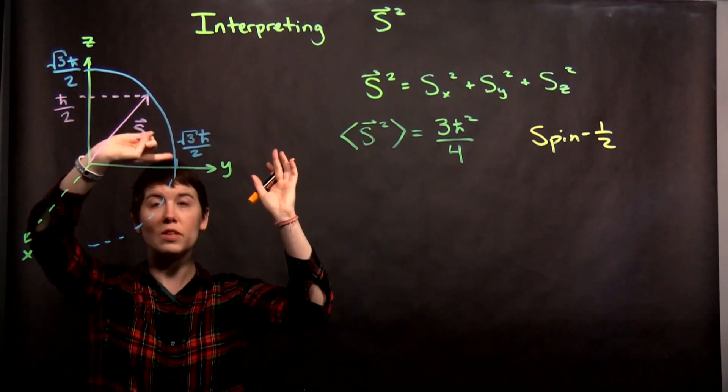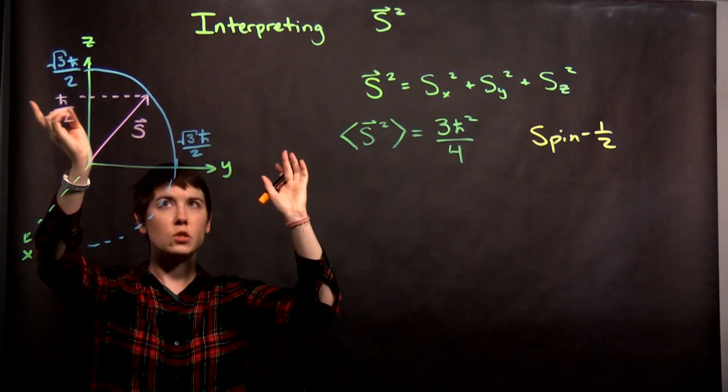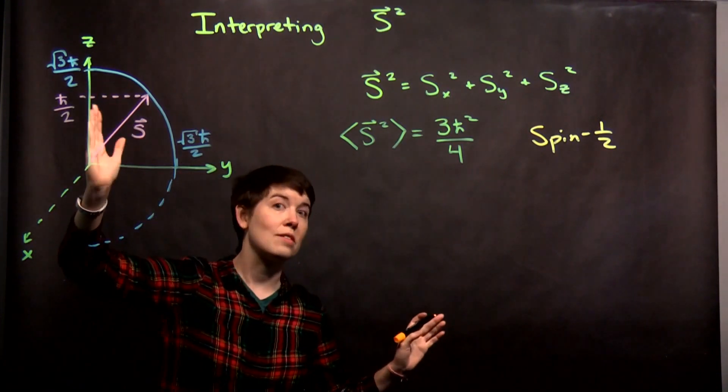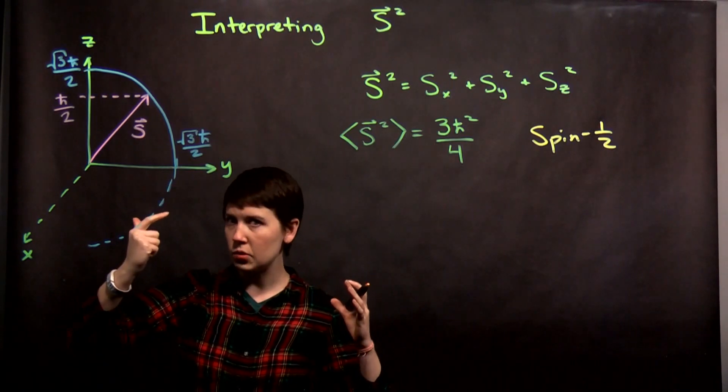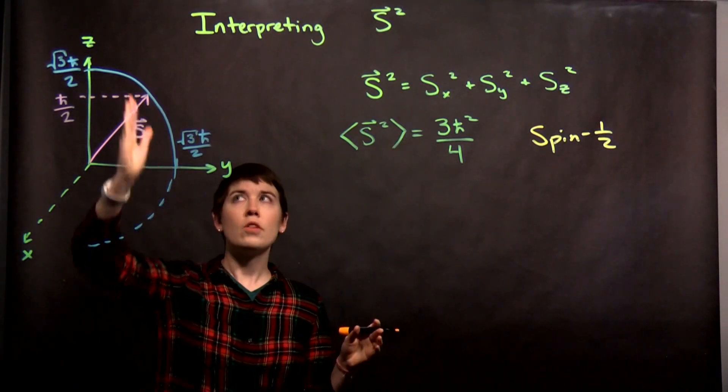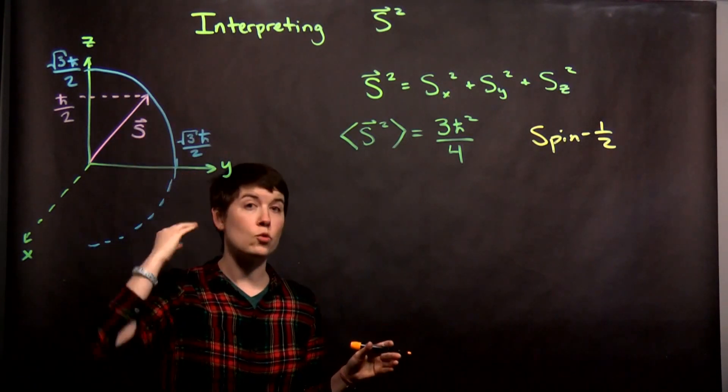It's a cone that points in any direction in the x-y plane, but always has the same component in z. And so that's one way to think about this, that we know that the z and the y measurements do not commute.